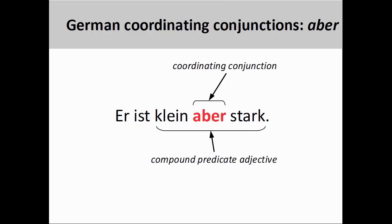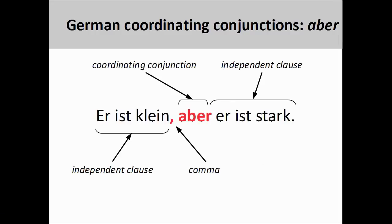The coordinating conjunction 'aber,' meaning 'but' or 'however,' is used to express a contrast or an exception. As you see on the screen, the conjunction can be used to merge two apparently contradictory adjectives — 'klein,' meaning 'small,' and 'stark,' meaning 'strong' — to express the idea that the subject, despite his small stature, possesses remarkable physical strength. The merging of these two adjectives creates the compound predicate adjective on the screen. Of course, the same idea could also be expressed in a longer sentence using two independent clauses: 'Er ist klein, aber er ist stark' — 'He is small, but he is strong.'